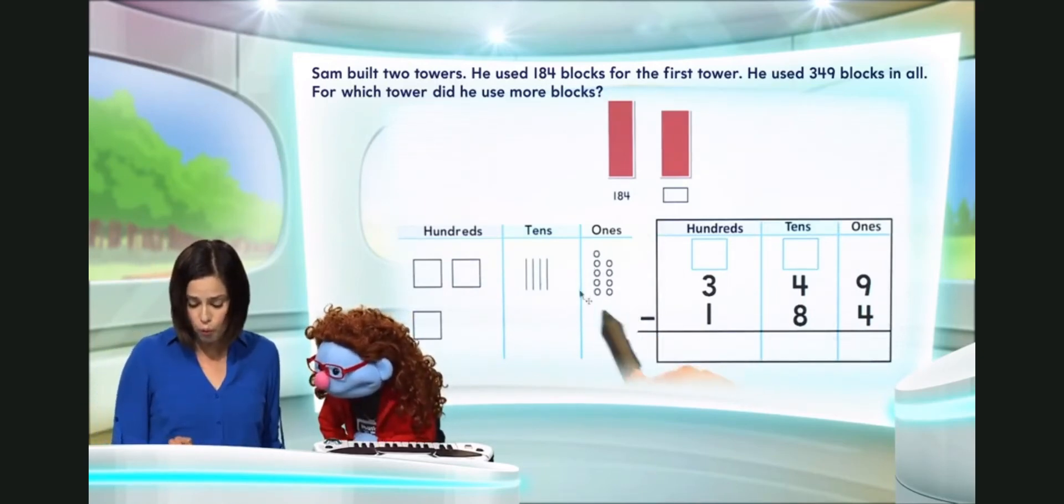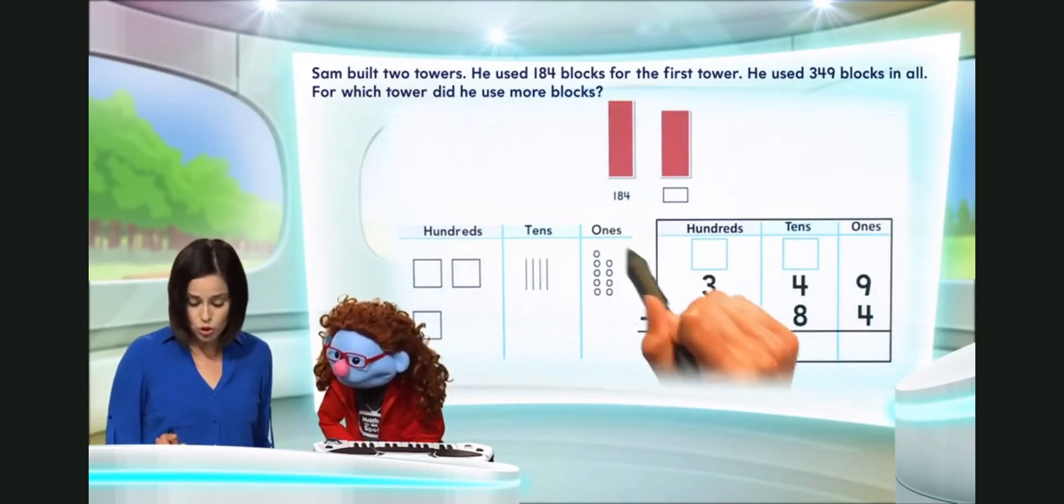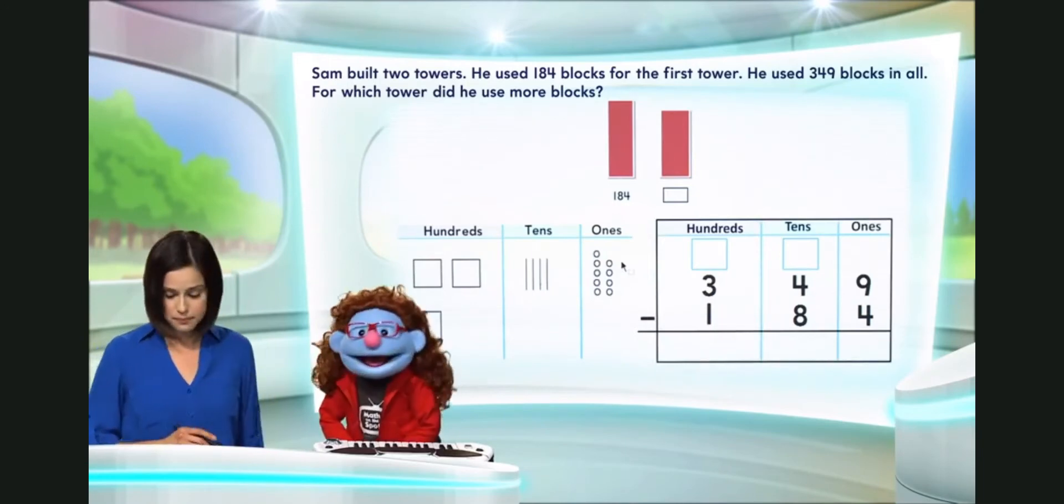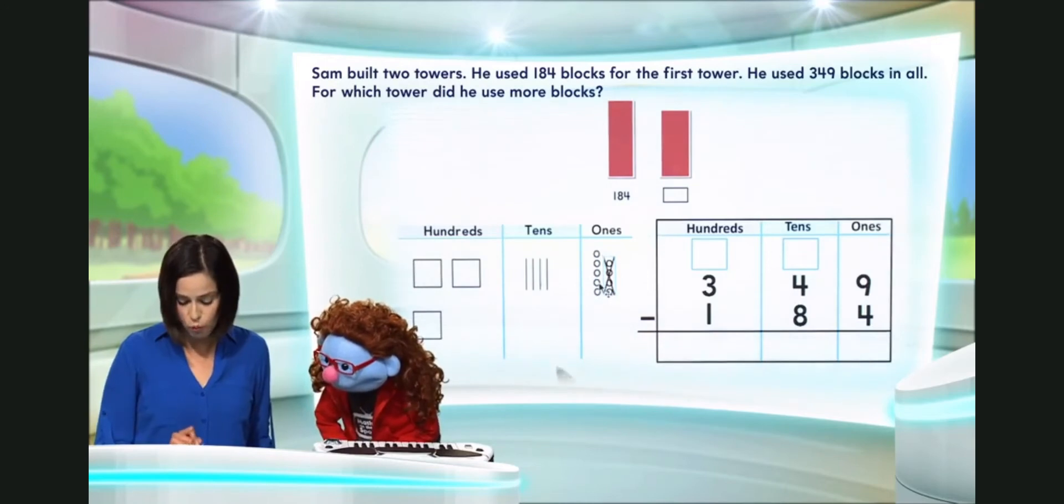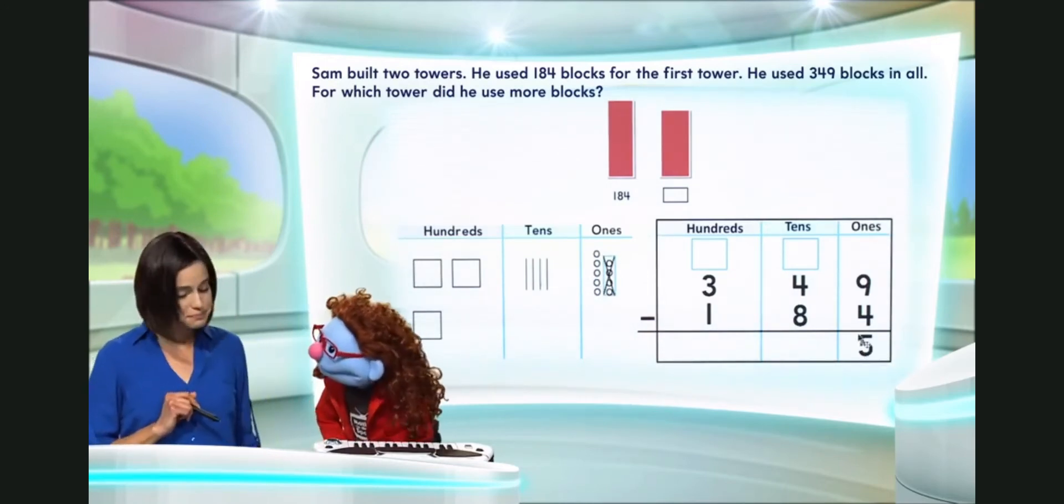Okay. Now, we need to subtract four ones from nine ones. And we don't have to regroup the ones because we have enough ones. So, let's go ahead and take away those four ones, and we are left with five ones.